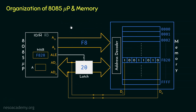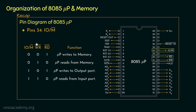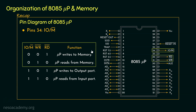You might be wondering why we are taking WR bar to facilitate memory read. When we studied pin 34 — IO/M bar — the table shows: when IO/M bar is 0, it indicates the microprocessor is going to communicate with the memory, because the memory signal is active low. If WR bar is reset to 0 and at the same time RD bar is set to 1, this entire combination means the microprocessor writes to the memory.